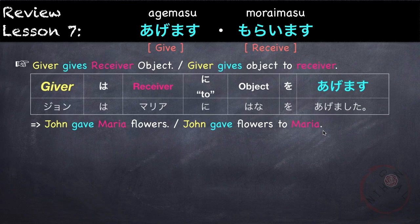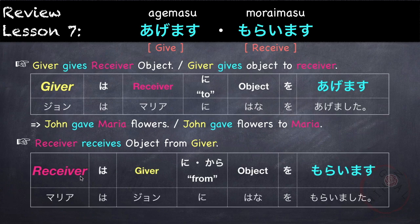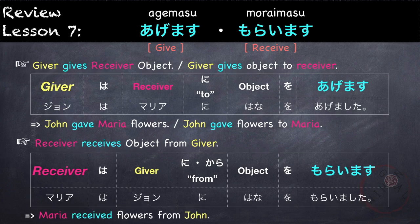For moraimasu, the receiver receives an object from the giver. The pattern is: receiver wa, giver ni or kara — where ni means 'from' — followed by object o moraimasu. For example, Maria wa John ni hana o moraimashita, meaning Maria received flowers from John.